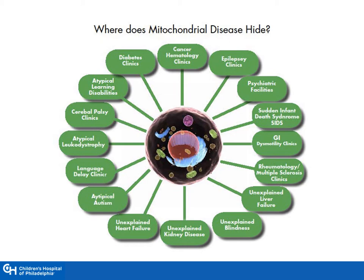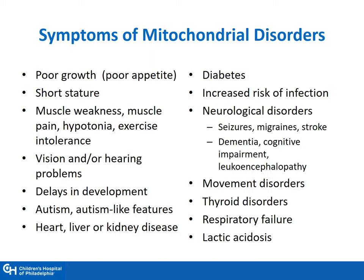Where does mitochondrial disease hide? According to this picture, nearly everywhere — it affects multiple organ systems, as previously discussed. Today, the target is going to be on GI symptoms. When we think about the symptoms of mitochondrial disorders, they vary because of the different organ systems that they affect. Patients can present with symptoms such as poor growth, short stature from malnutrition, hypotonia, vision and/or hearing problems, as well as delays in development.